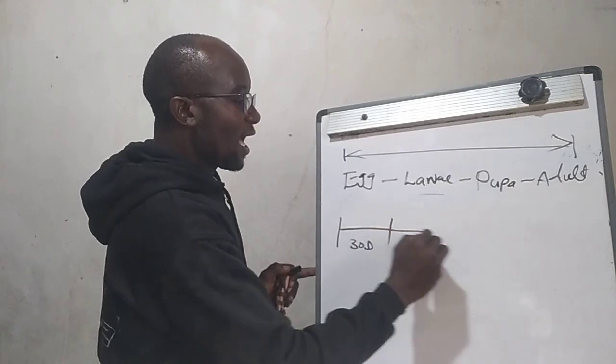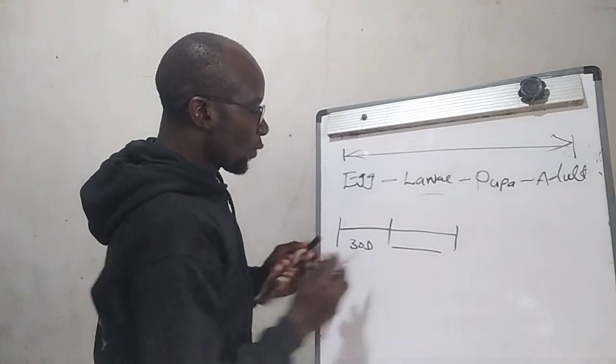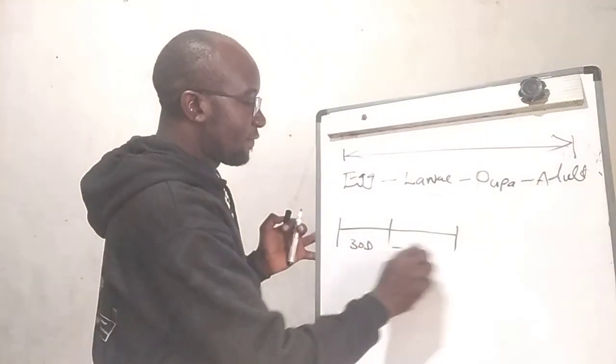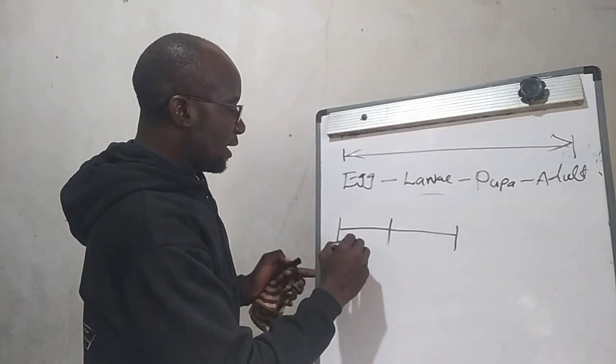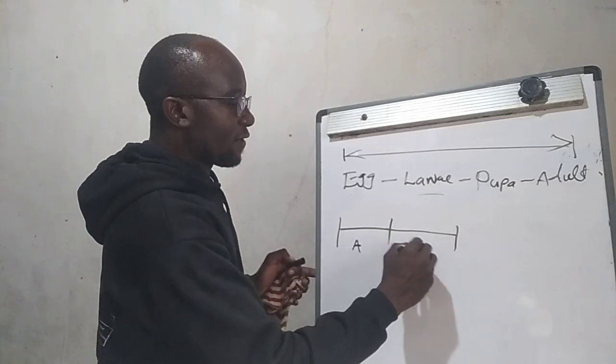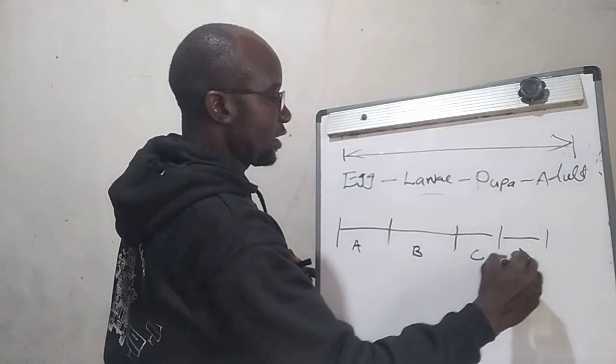After 30 days, we have another generation. We will call the generations, we will give them different names. We have generation A, we have generation B, and then we have generation C and generation D.